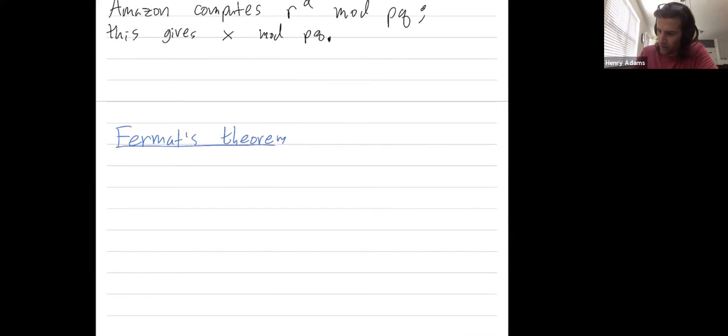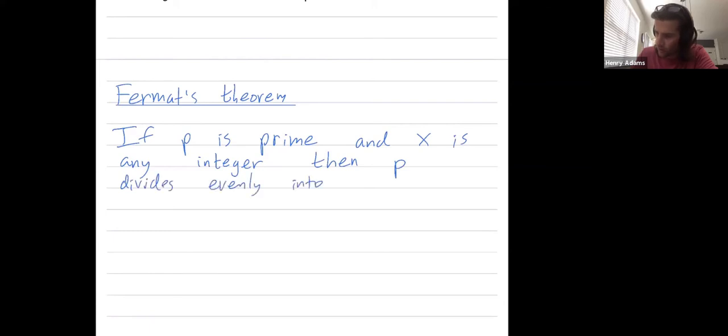So Fermat's theorem says that if P is prime, so 2, 3, 5, 7, 11, etc., and X is any integer, then P divides evenly into X to the Pth power minus X.